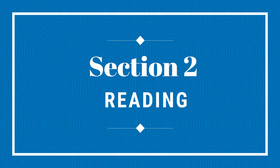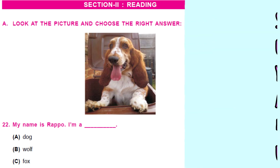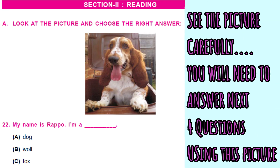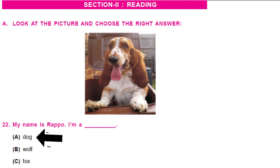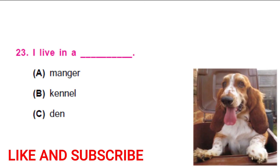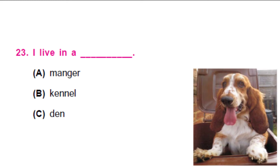Now we will go to our Section 2, which is on reading. Look at the picture and choose the right answer. My name is Rappo. I am a what? What is there in this picture? Can you choose the right answer from A, B, C? It is a dog — option A. That's correct. Well done, kids. Let's see what the next question is about. I live in a dash — so the dog lives in which option here? It is option B, kennel — that is what a dog's house is called.